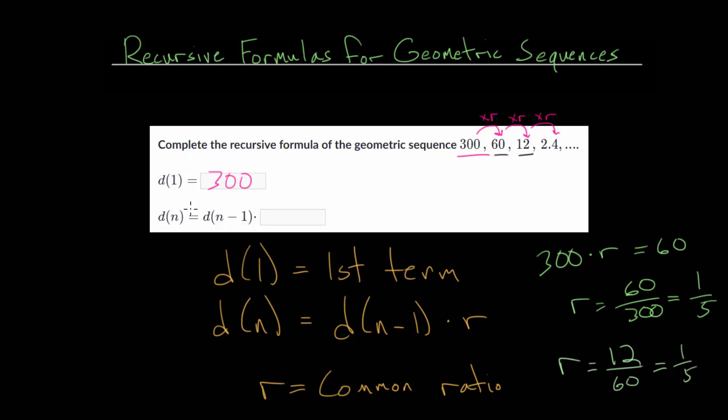And again, for this pattern here, to find the nth term, we take the term before it and multiply it by the common ratio. So this is r right here. And we figured out that r would be one-fifth.